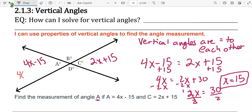4 times 15 minus 15. 60 minus 15 is 45. So this angle is 45. That means that this angle also must be 45.